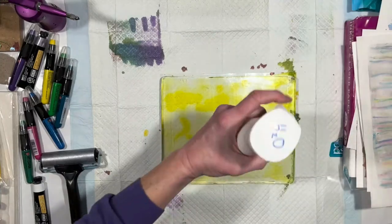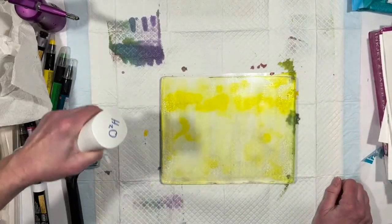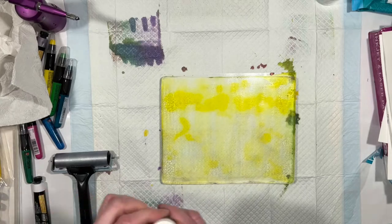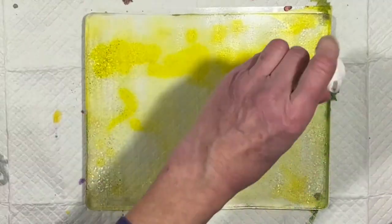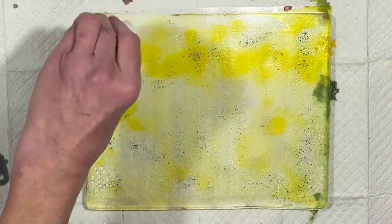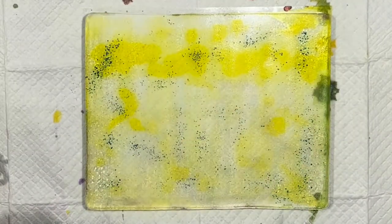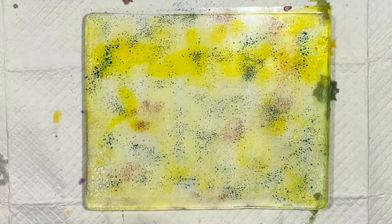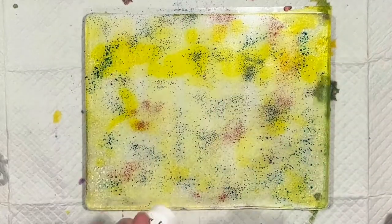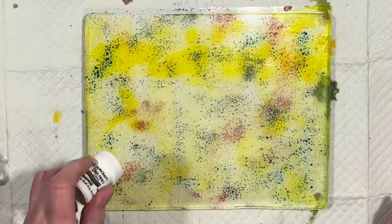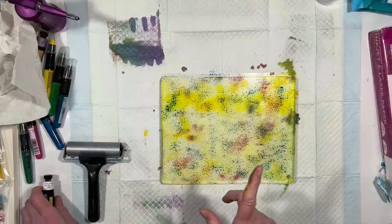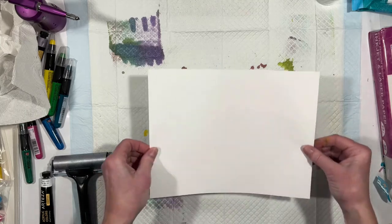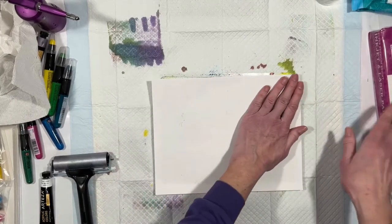Here's my ultrafine mister with water in it. Alright, so I'm going to dampen my gel plate and we are going to sprinkle on some brush-o. Let's do a preliminary pull. Let's do that. That'll get some of the moisture off.